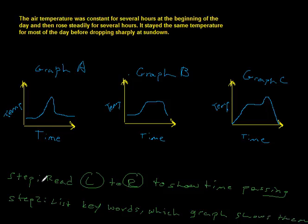And this is step one here. All righty. So let's look at these. We're going to read these from left to right as time marches on. And we're going to pick out keywords from the actual problem from the very beginning. So the first thing that you know is that the air temperature was constant.